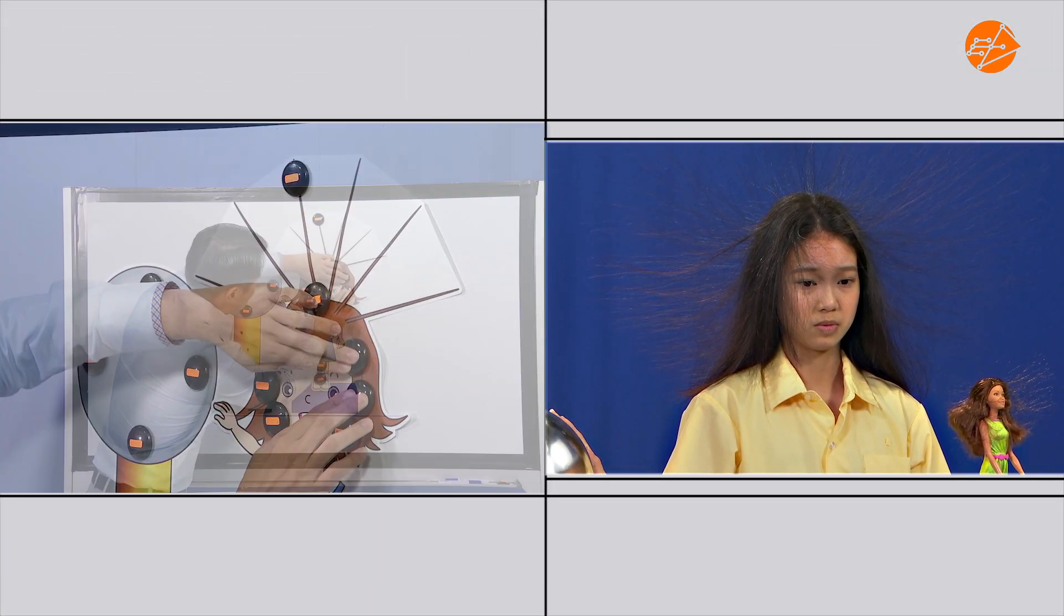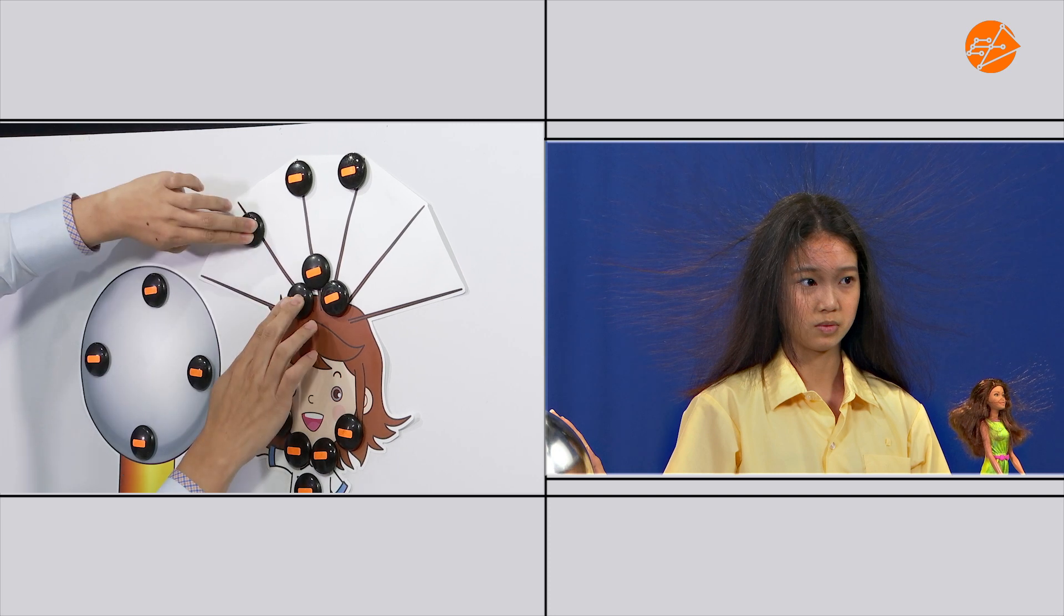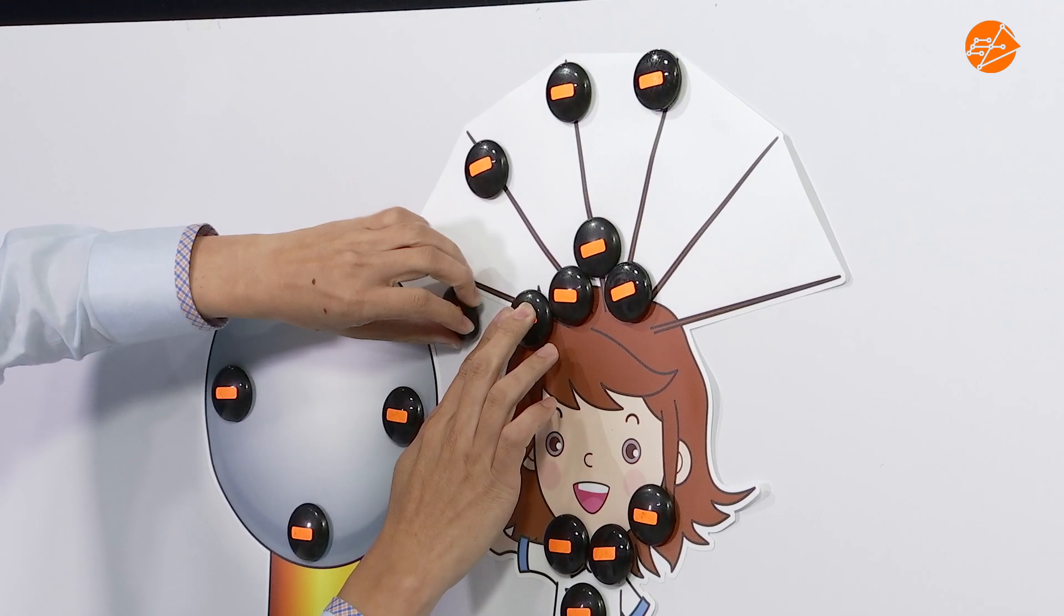As her hair is now all negatively charged, the electrostatic force of repulsion causes her hair to spread out.